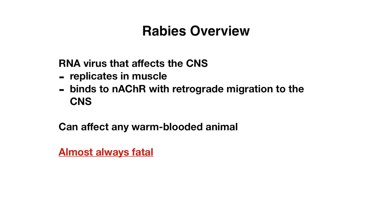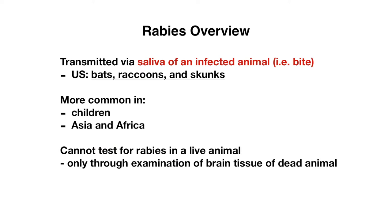Let's start off with rabies and give an overview. Rabies is an RNA virus that affects the central nervous system. It does this by replicating in the muscle and binding to nicotinic acetylcholine receptors in the muscle, with retrograde migration to the CNS — that's how it gets to the CNS. It is transmitted through the saliva of an infected animal, often through an animal bite, which is how it actually gets into the muscles.